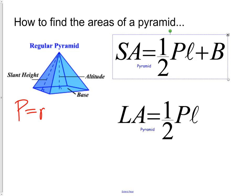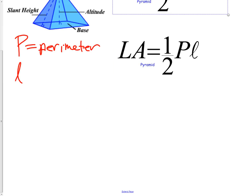So P is for perimeter. L is for slant height. And the big B stands for the area of the base.